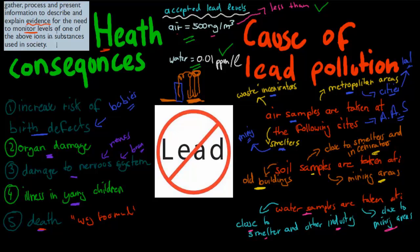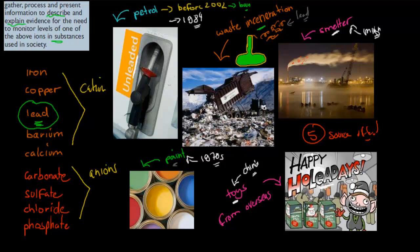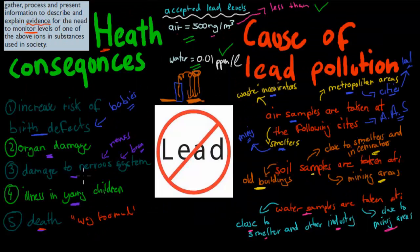So to gather information to describe and explain evidence for the need to monitor levels of one of the above ions — the ion we chose was lead — in substances used in society. We also want to make sure there's no lead in toys, because kids will lick or put toys in their mouth and lead can transfer from the paint. If you want to go through the secondary data, the websites are in the description and should be quite useful. Thank you for watching.